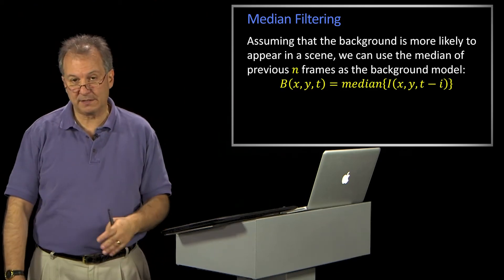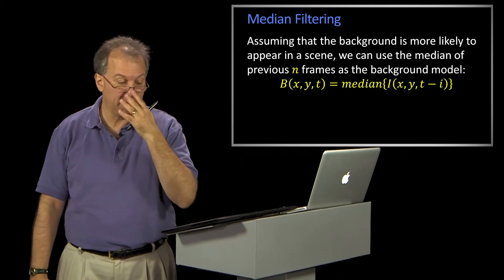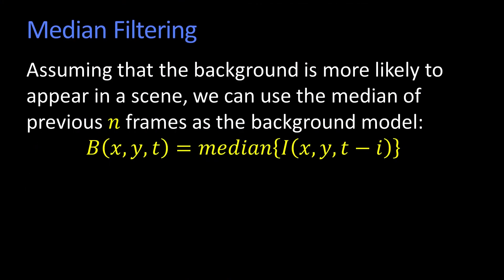So median filtering for background subtraction does exactly what you might think. Now we're going to assume that the background will be modeled by the last n frames, but I'm not going to take the average. I'm going to take the median value.